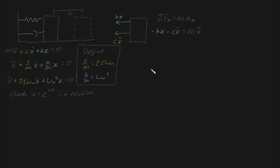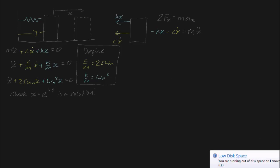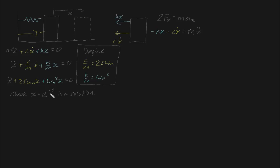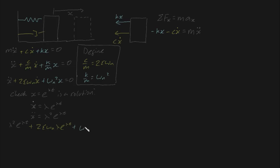To check whether x = e^(λt) is a solution, we plug it in — but first we need x-dot and x-double-dot. x-dot would be λe^(λt), and x-double-dot would be λ²e^(λt). Plugging these into the equation gives us: λ²e^(λt) + 2ζωₙ·λe^(λt) + ωₙ²·e^(λt) equals zero, if it is indeed a solution.